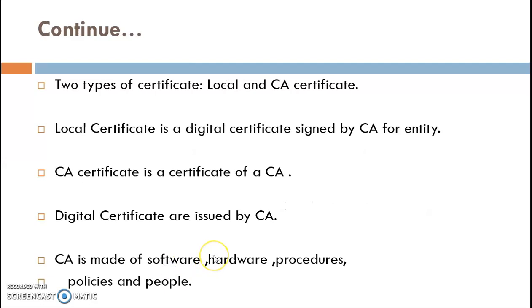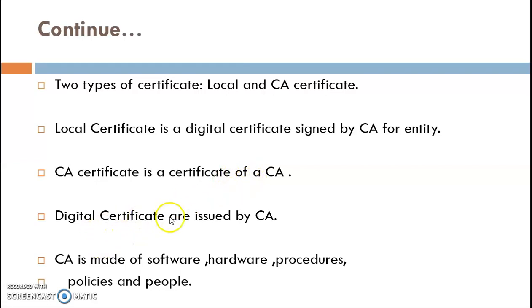There are two types of certificates: a local certificate and a CA certificate. A local certificate is a digital certificate signed by a CA for an entity, whereas a CA certificate is a certificate of a CA itself. Digital certificates are issued by the Certification Authority, which is made up of software, hardware, procedures, policies, and paper.